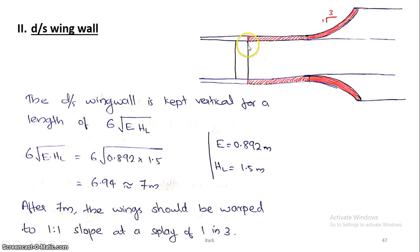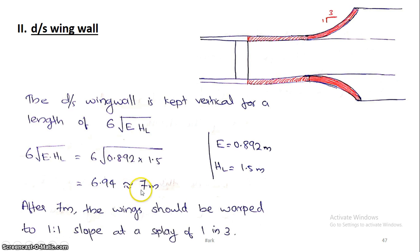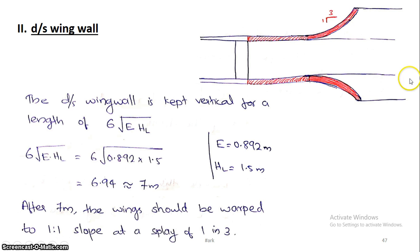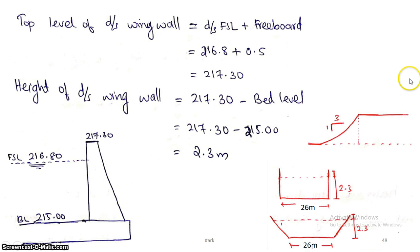The length formula is 6√(e·hl). For our system design values, e is 0.892 and hl is 1.5, giving 6.94 meters, so we provide 7 meters. We provide 7 meters of straight vertical wing walls, and this completes the transition.